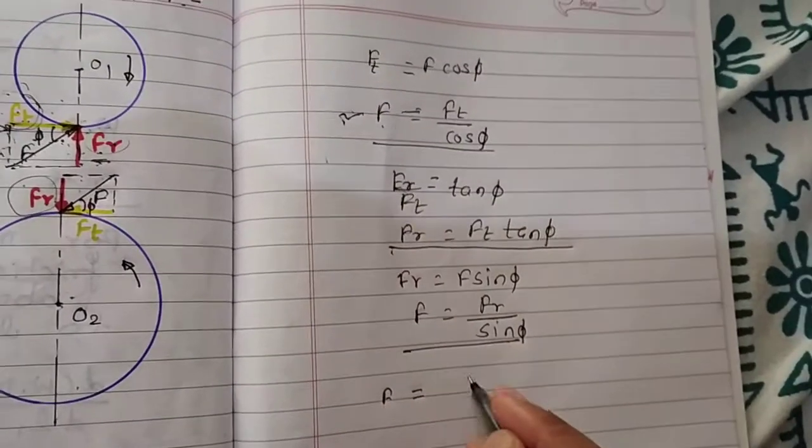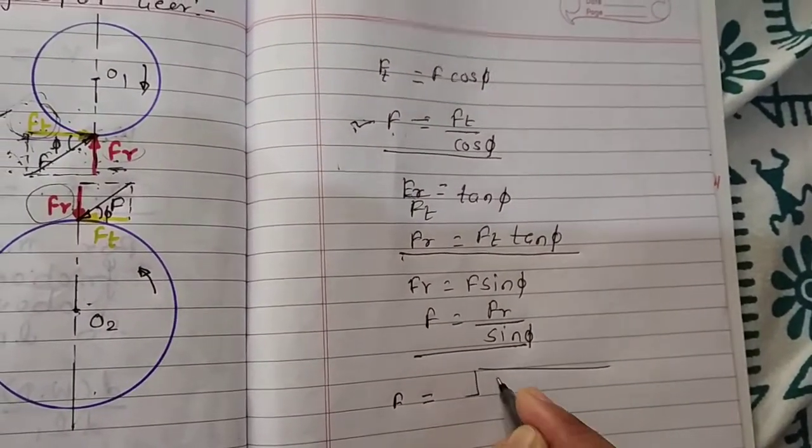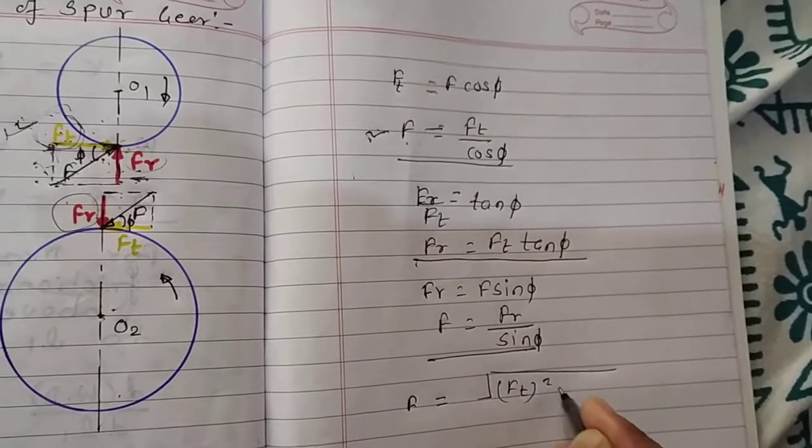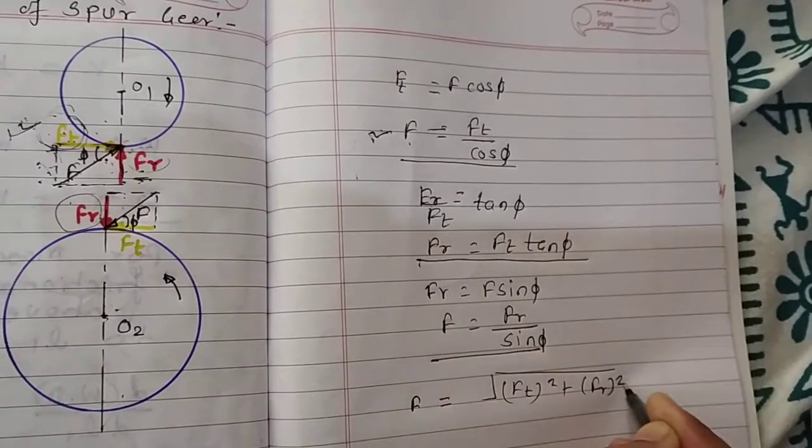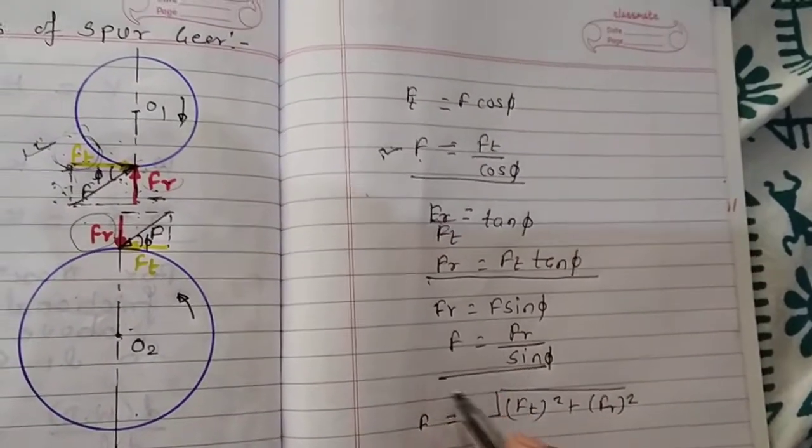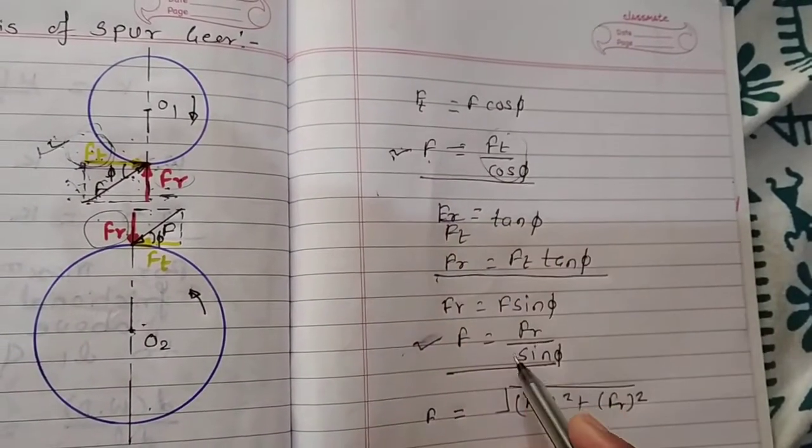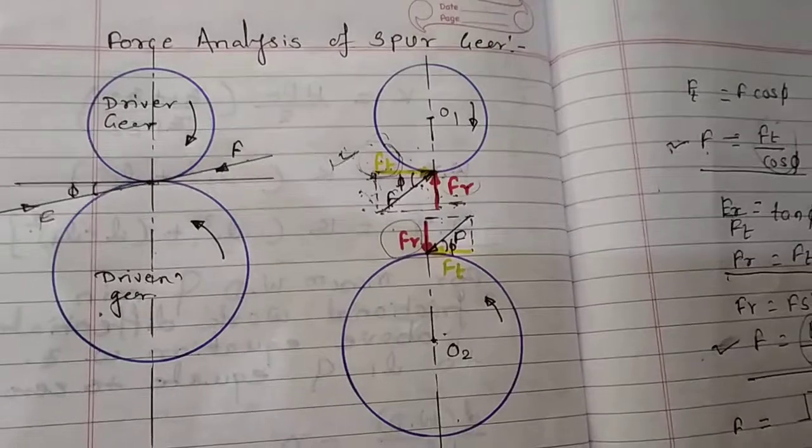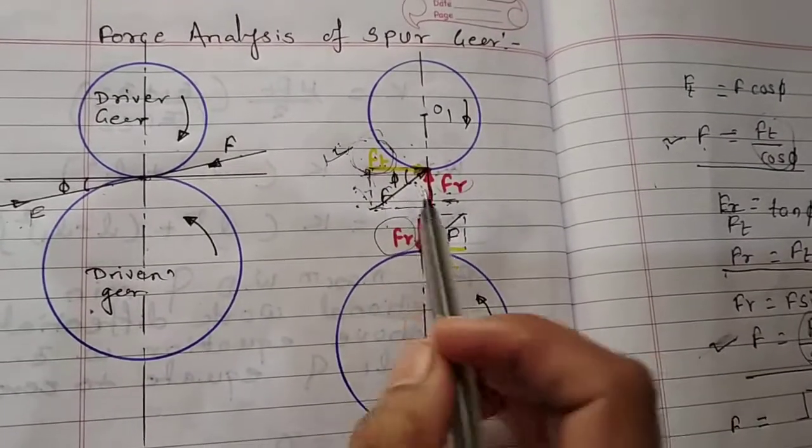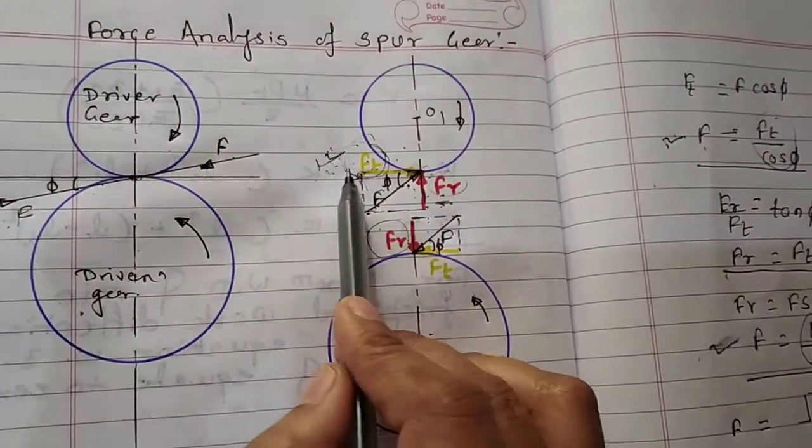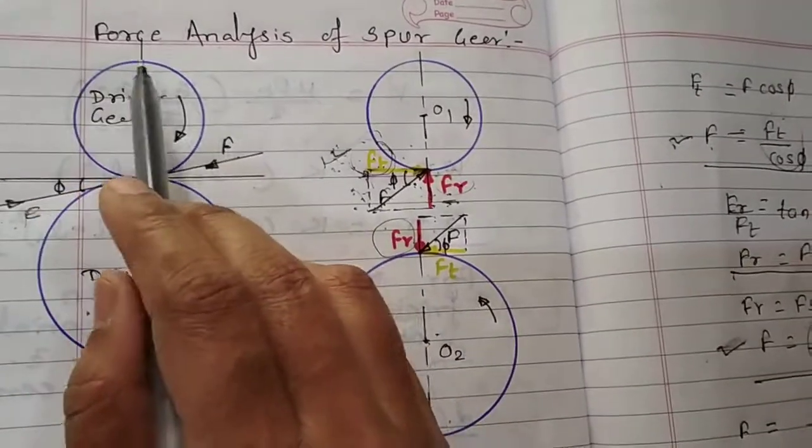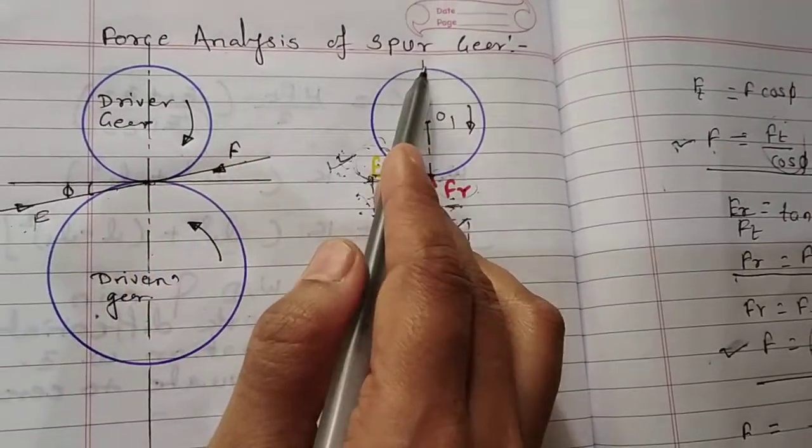When we want the resultant force F, we can write it as √(Ft² + FR²), or we have the equation for F in terms of Ft or in terms of FR. I hope you get the idea how to get the equations for Ft, FR, and F in case of spur gear force analysis.